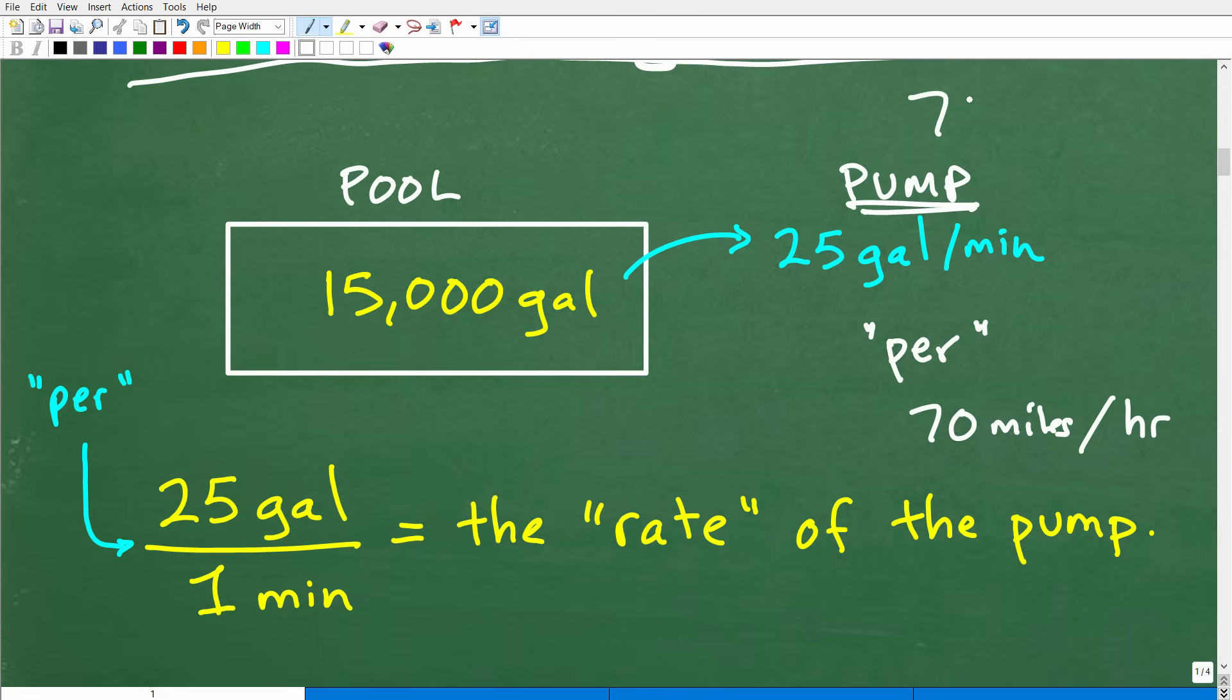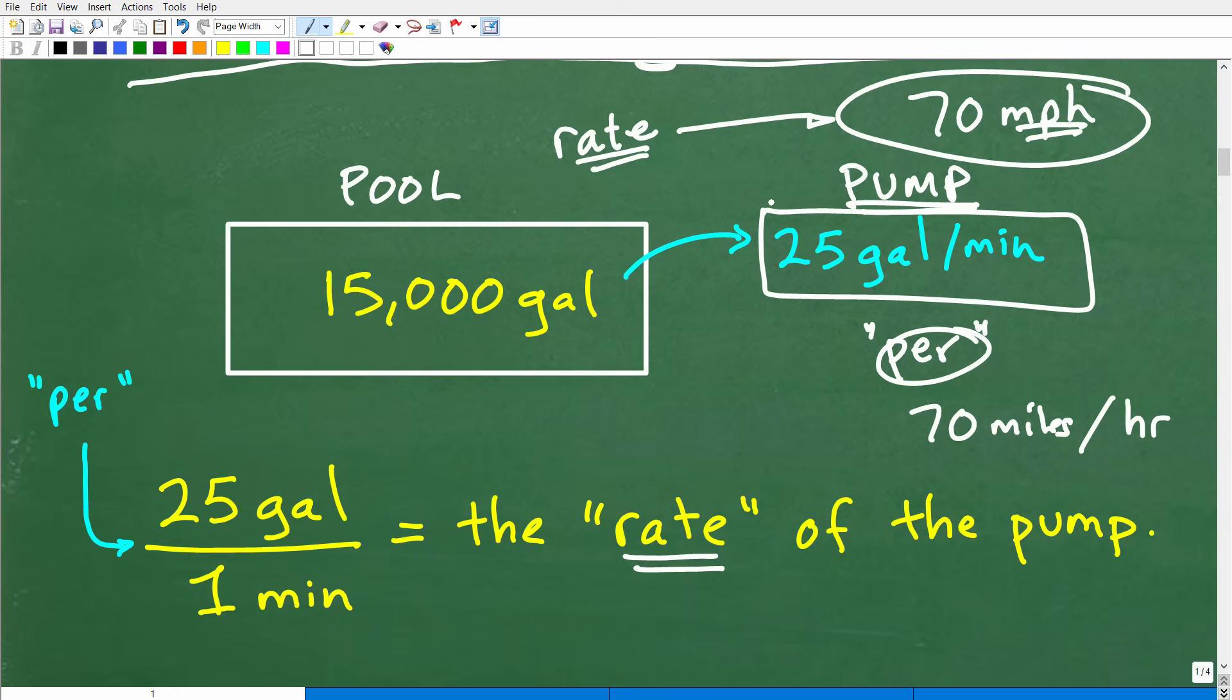We don't write it 70 miles per hour. We typically write it MPH, 70 miles per hour. So we're dealing with something called a rate. If I asked you, what's the rate of that truck going down the road? You would interpret that word rate as speed or velocity, and you would be correct. So the rate of the truck, for example, could be 70 miles per hour.